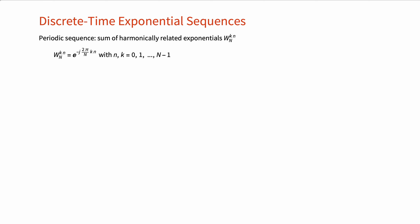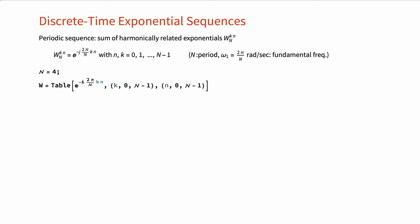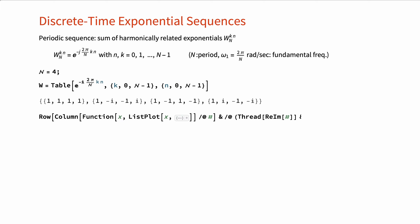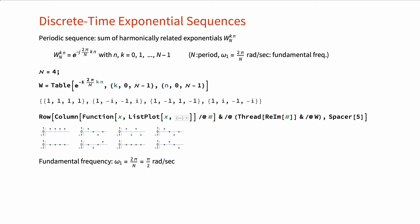Here we have a family of discrete time harmonically related complex exponential sequences with period N and fundamental frequency ω₁ = 2π/N radians per second. For N equal to 4, the exponential sequences can be evaluated as shown here. We can also plot the real and imaginary parts of these sequences. The fundamental frequency is π/2 and the four harmonically related frequencies are as shown here.